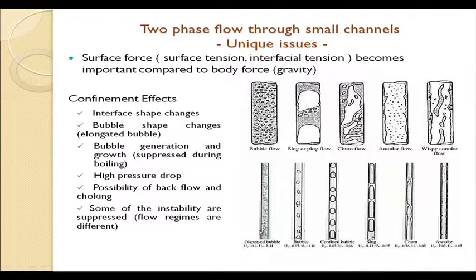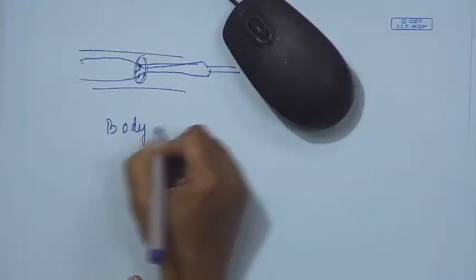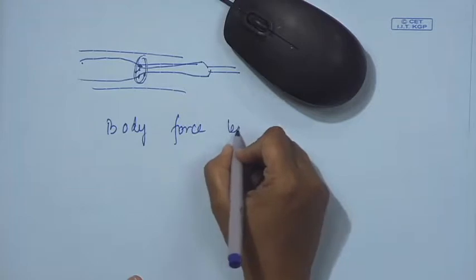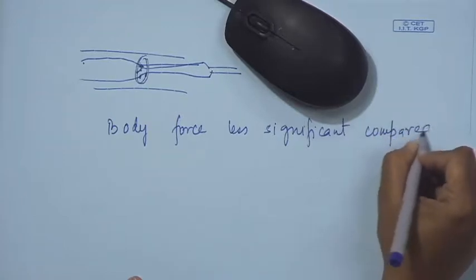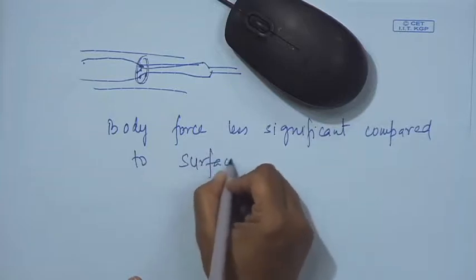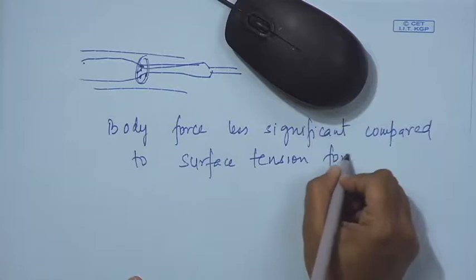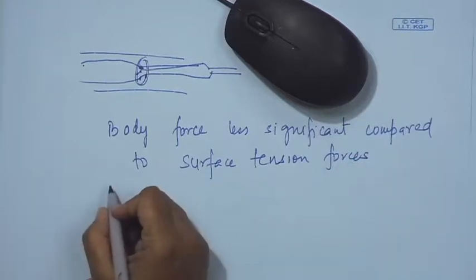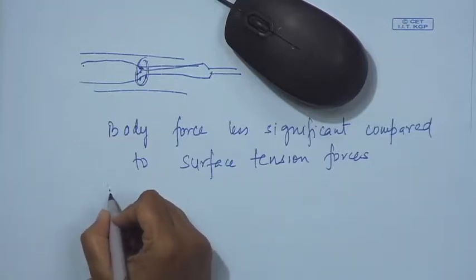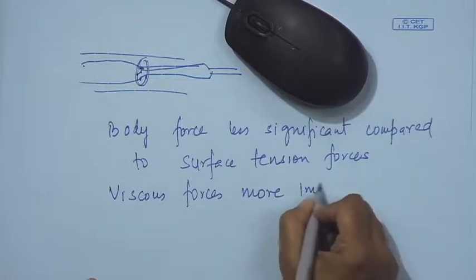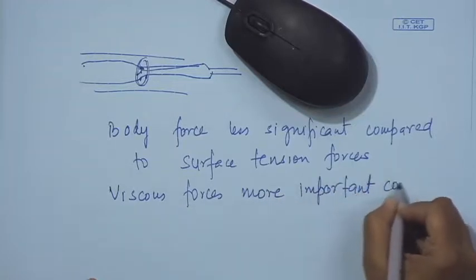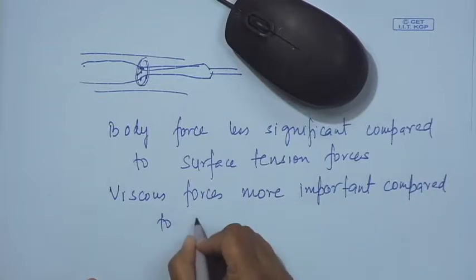We have dispersed bubbles for a very small range and annular also for a very small range. The primary reason is that body forces are less significant compared to surface tension forces. Due to this, the effect of inclination is less and asymmetric distribution is less. The other thing is we find that viscous forces are more important than inertial forces.